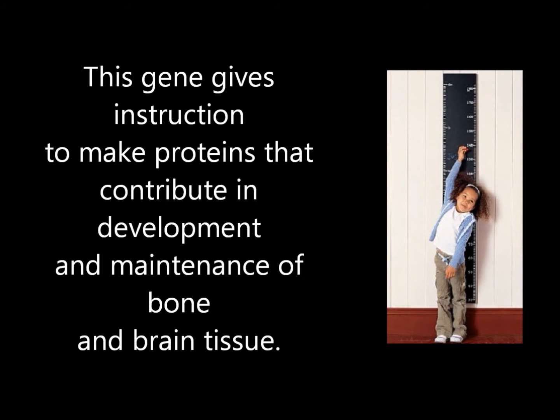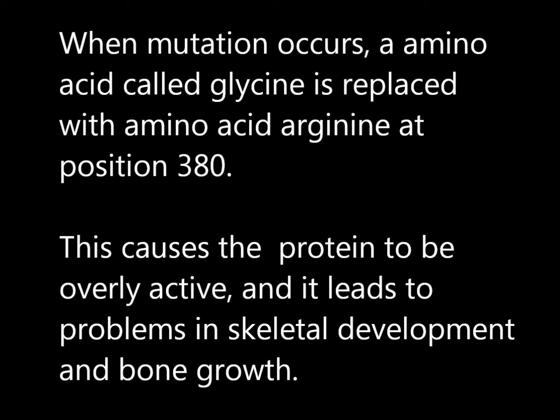This gene gives instructions to make proteins that contribute to the development and maintenance of bone and brain tissue. When a mutation occurs, an amino acid called glycine is replaced with the amino acid arginine at position 380. This causes the protein to be overly active, leading to problems in skeletal development and bone growth.